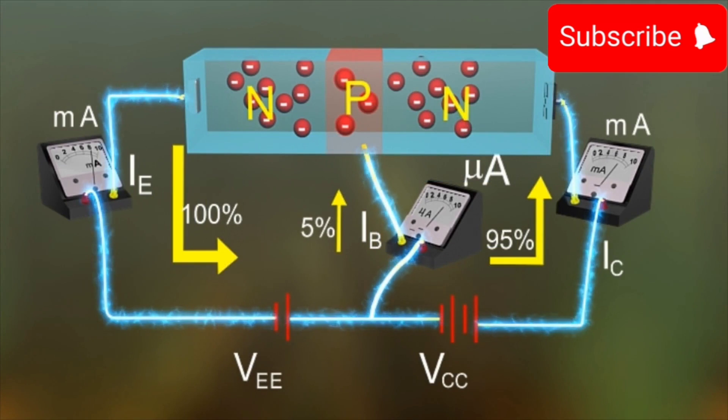In a transistor, the currents IE and IC are of the order of few milliampere and the current IB is of the order of a few microamperes.